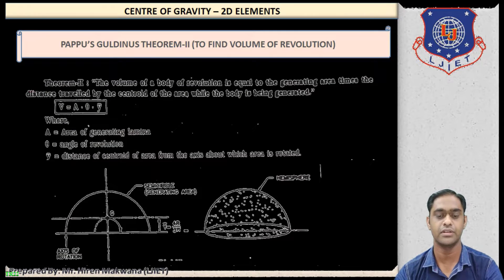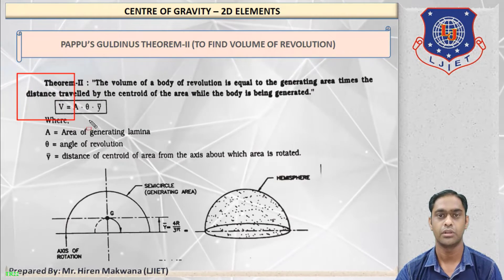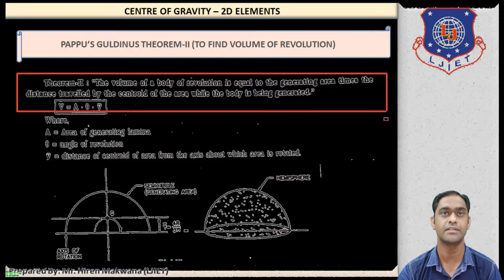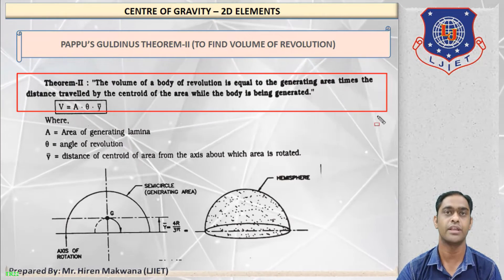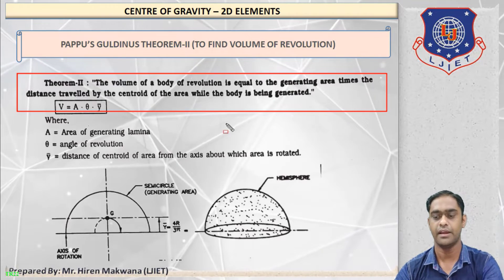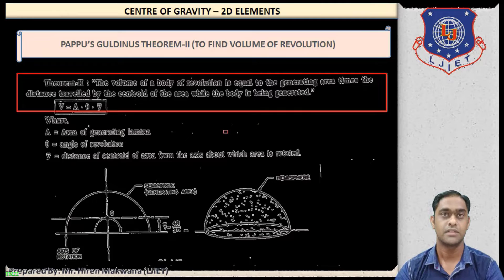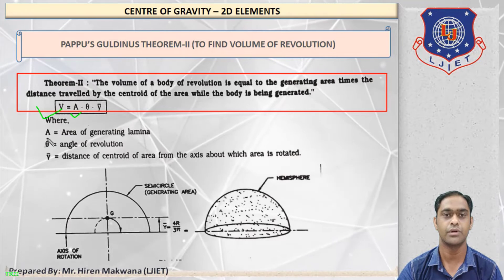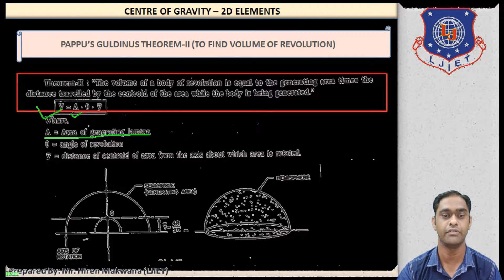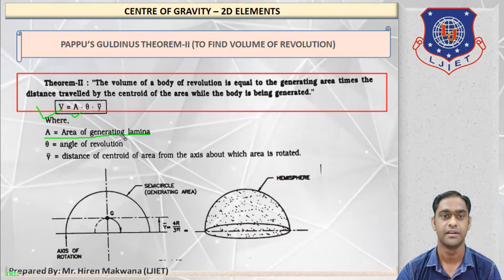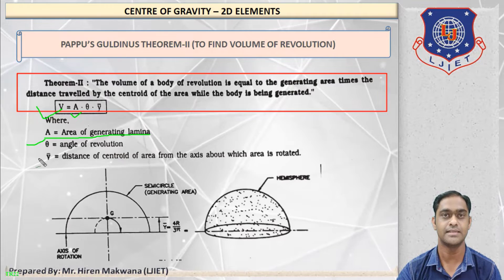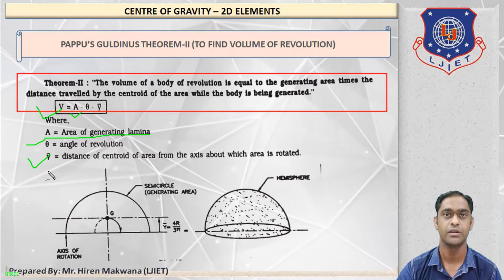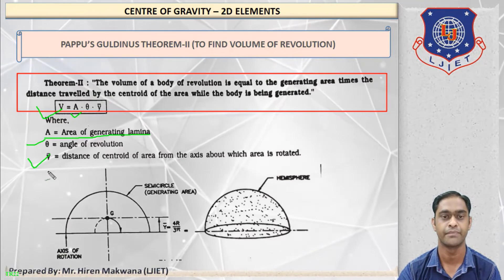Now let us go to Theorem 2, which is used to find the volume of a particular element. The statement: the volume of a body of revolution is equal to the generating area times the distance travelled by the centroid of that area while the body is being generated. The formula is: Volume = A·θ·ȳ, where A is the area of the generating lamina, θ is the angle of revolution (360 degrees), and ȳ is the distance of the centroid from the axis of rotation.